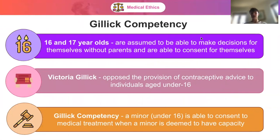We're now going to look at Gillick Competency. Under the Mental Capacity Act of 2005, all individuals above 18 are assumed to have capacity, and 16 and 17 year olds are usually assumed to be able to make decisions for themselves without parents. However, this issue becomes a bit more murky for under 16s. A good case study here is Gillick Competency.